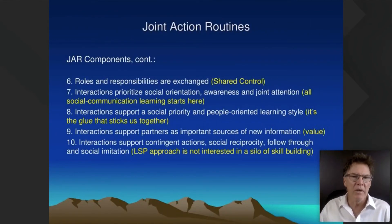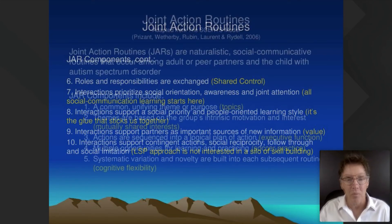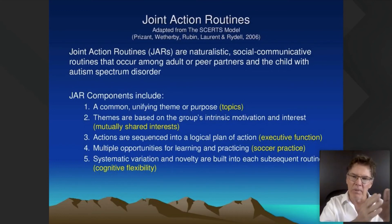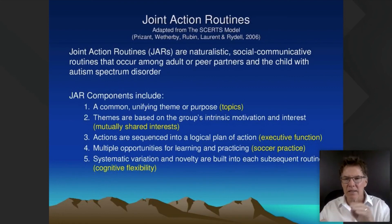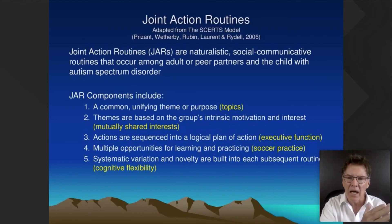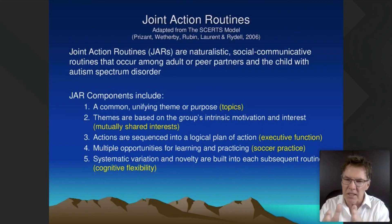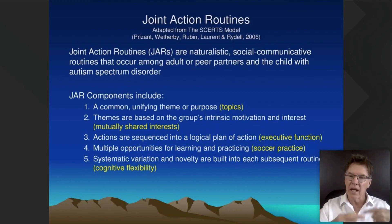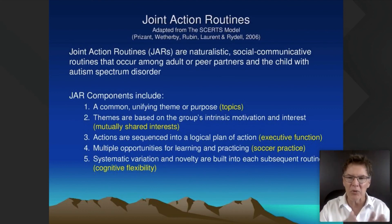Number six: roles and responsibilities are exchanged. Many of our kids have executive functioning issues — they can't plan things out with a beginning, middle, and end. Some of our kids are kind of flighty, just doing whatever comes to mind. Joint Action Routines provide a logical sequence. Think of conversations — it's a logical sequence. We end this part of the conversation as we transition into the next part. Conversation builds just like Joint Action Routines build in a logical sequence. Very nice parallels and dot connections here.